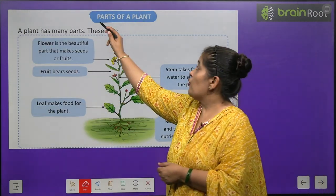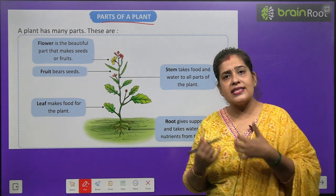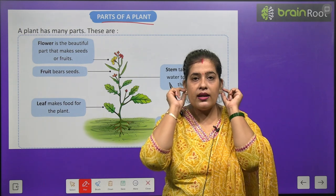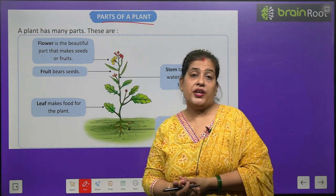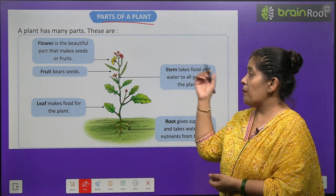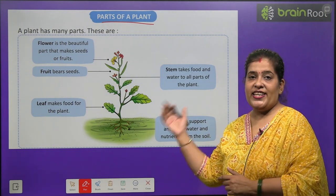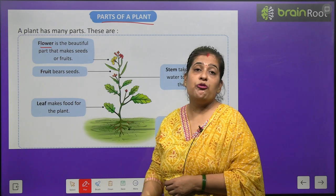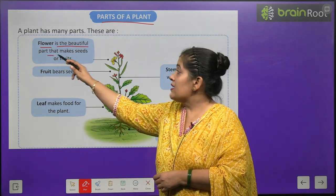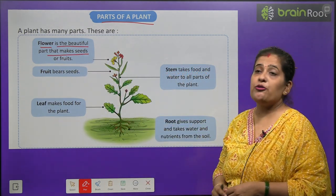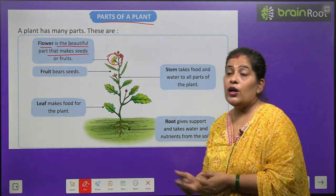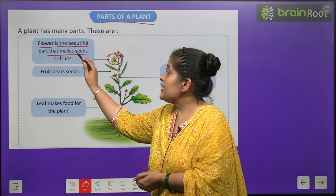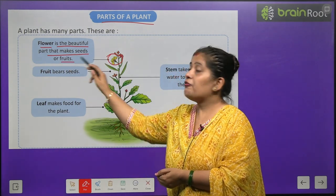Now I will tell you about parts of plants. Jaise hamari body ke different parts hote hain — eyes, nose, ears, fingers — aise plants ke bhi parts hote hain. Flower — phool — is the beautiful part that makes seeds or fruit. Phool kya hai? Paudhe ka sabse sundar bhaag hai. Aur yeh seeds — beej — aur fal banata hai.